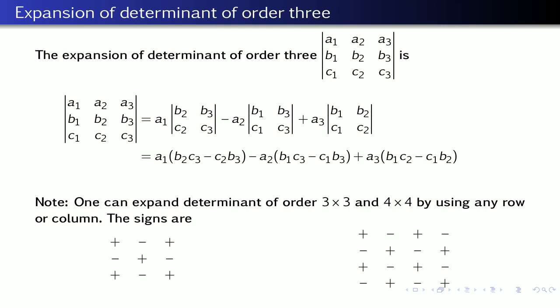Using these signs, one can expand a determinant of order 3 or order 4 by using any row and any column. I suggest students that to expand a determinant of order 3 or 4, please select the row or column which contains maximum zeros, because that will automatically reduce your calculations and save time.